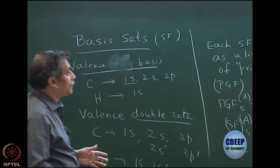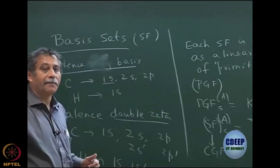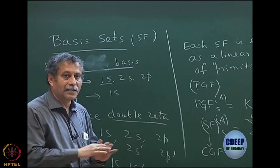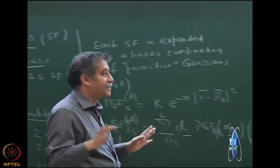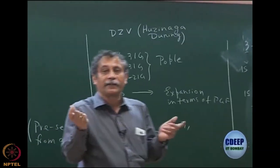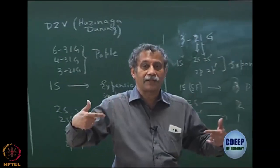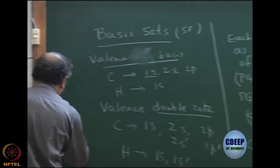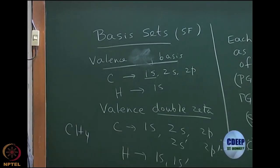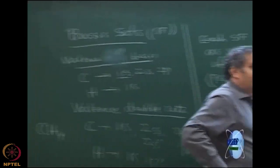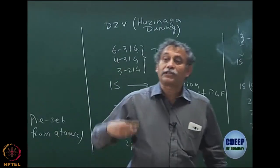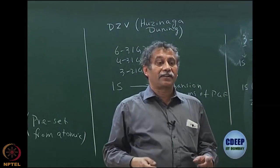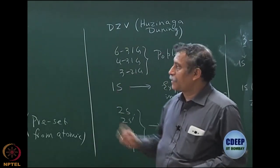Whether you use Huzinaga-Dunning double-zeta valence or Pople's basis, that capital M is the same, since both use 1s, 2s, 2s', 2p, 2p'. So the total M in the SCF calculation is the same; only the quality of the integrals differs. For example, if you do a methane calculation, what is the total number of contracted atomic orbitals? P is threefold degenerate, so we do the same for Px, Py, Pz.